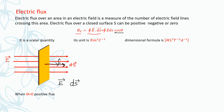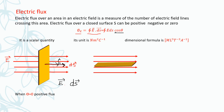Now if electric field lines and the area vector are perpendicular to each other — in this case the electric field lines are parallel to the surface and the area vector is normal to the surface, with the unit vector drawn as the outward normal — the angle between the unit vector and the electric field is 90 degrees. So theta is 90 degrees, cos 90 is 0, and flux will be equal to 0.